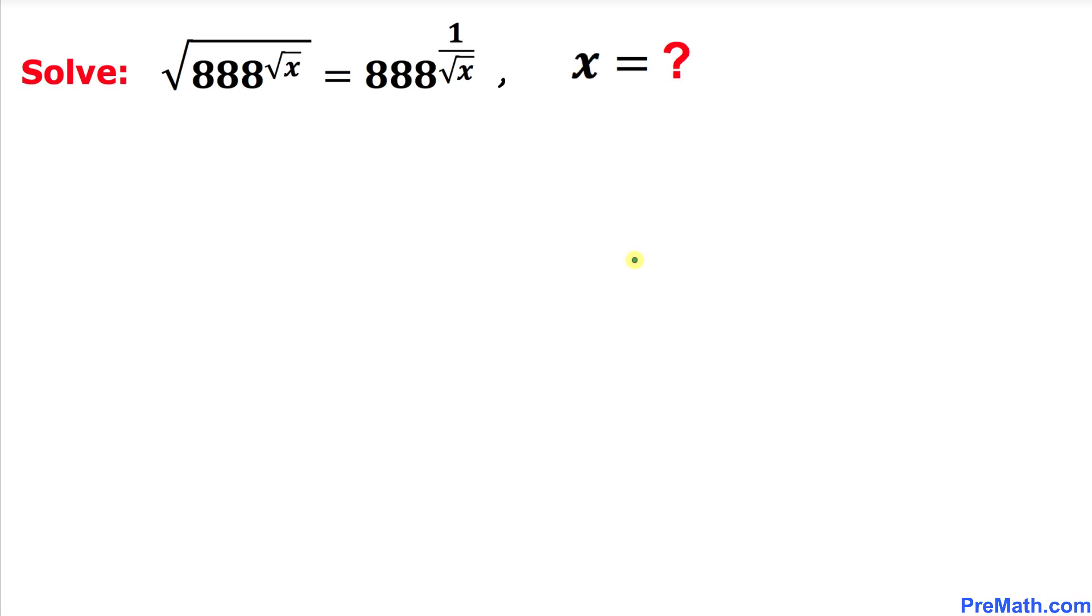Welcome to PreMath. In this video, we are going to solve this radical equation: the square root of 888 to the power of square root of x equals 888 to the power of 1 over square root of x. In other words, we are going to solve for x. Please don't forget to give a thumbs up and subscribe.